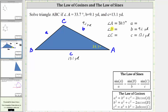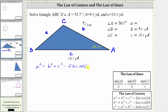We need to find the measure of angle B and angle C, as well as the length of side A. Because we don't have a known angle and the length of its opposite side, we cannot use the law of sines yet. But we do have a known angle and the lengths of the two sides that form that angle, and therefore we can use the law of cosines to find the length of the side opposite the known angle — in this case, side A. We'll use the equation: A squared equals B squared plus C squared minus two times B times C times cosine of angle A.